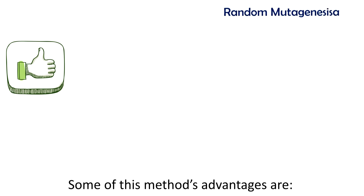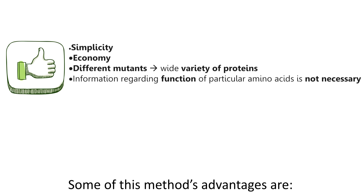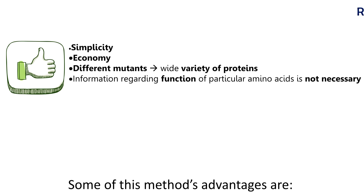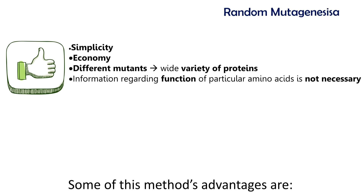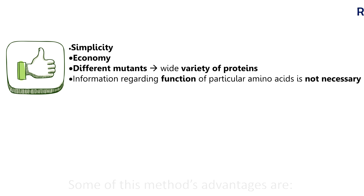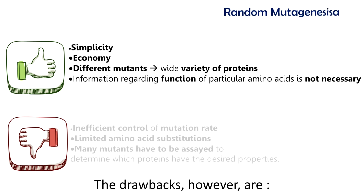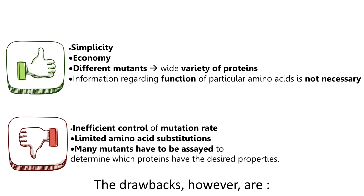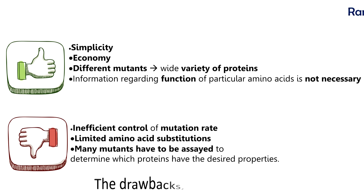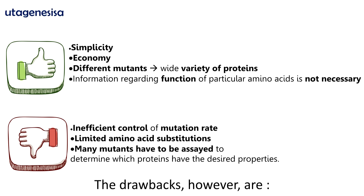Some of this method's advantages are: it's not as complicated as other methods, it's economical, it generates different mutants, and details of particular amino acids are not necessary. The drawbacks, however, are that the mutation rate might be inefficient, there is limited amino acid substitution, and mutants have to be assayed.